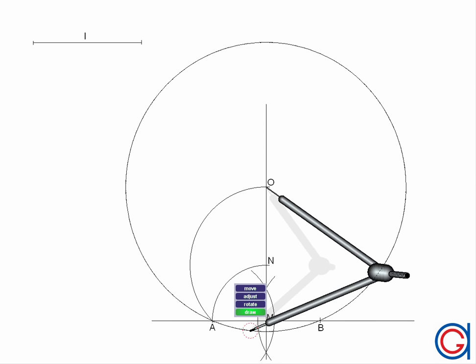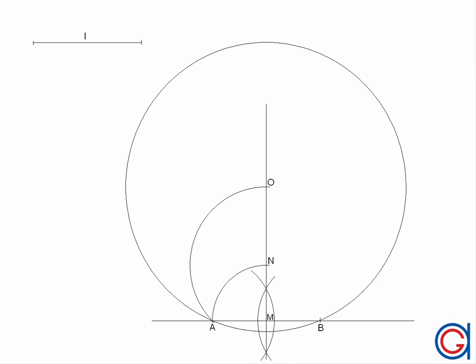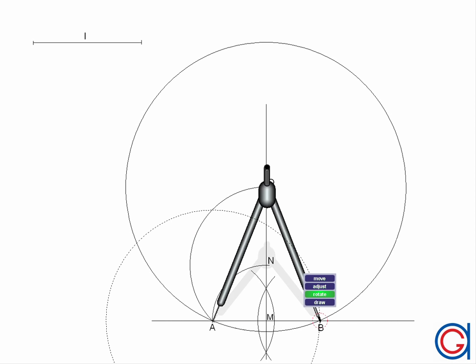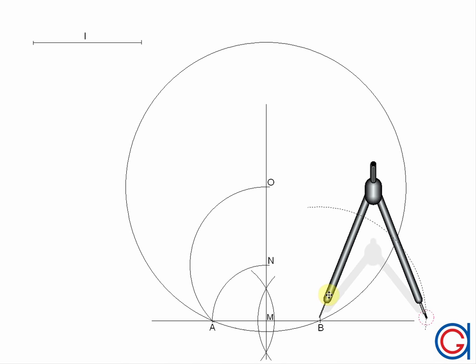We are close to finishing the exercise. The last step we need to do is set our compass to the length L or side AB and scribe seven arcs onto our previously drawn circumference as can be seen here in the video.